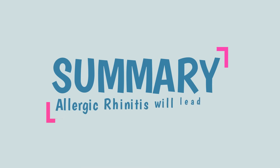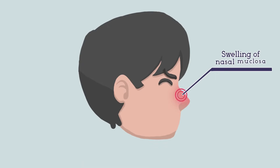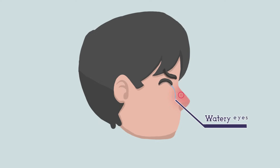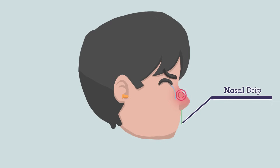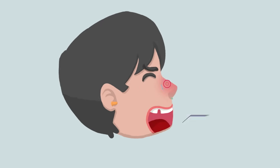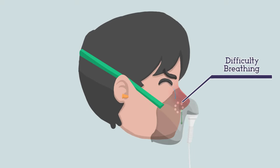To summarize, allergic rhinitis will lead to: 1. Swelling and congestion of nasal mucosa. 2. Watery eyes. 3. Stuffed ears. 4. Nasal drip due to excessive mucus production. 5. Sneezing. 6. Difficulty breathing.